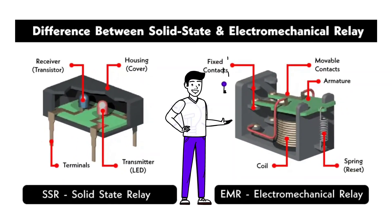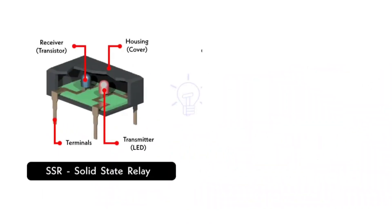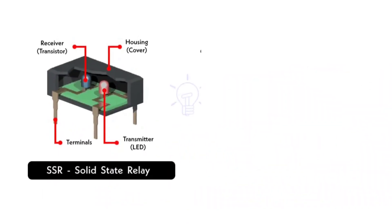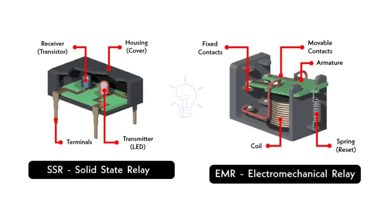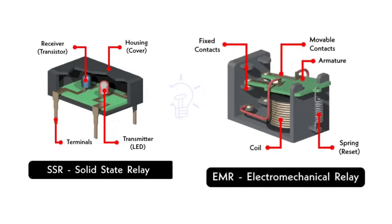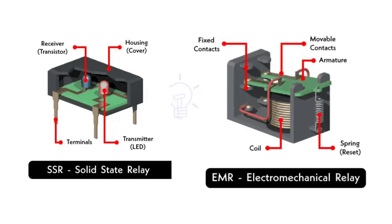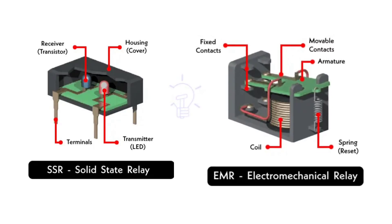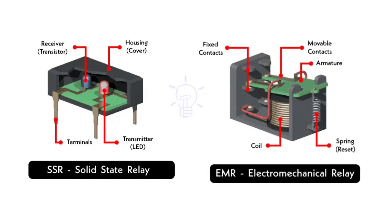In this video we will discuss the difference between electromechanical and solid-state relay, SSR versus EMR. Solid-state relay (SSR) and electromechanical relay (EMR) are both different types of electrical relays used in electronic circuits. Both are used for switching high-voltage circuits using a low-voltage signal. The major difference between these two is that the SSR does not have any moving parts, while EMR does, and there are several other differences between them.